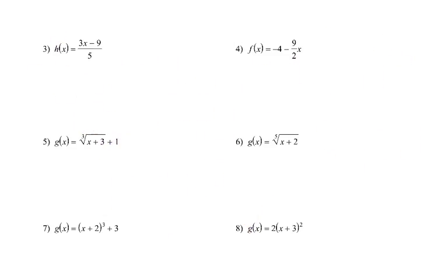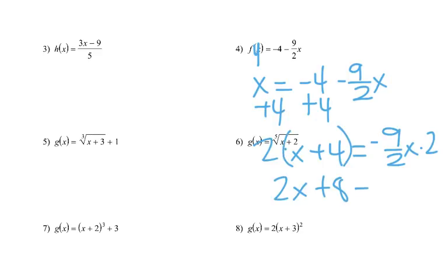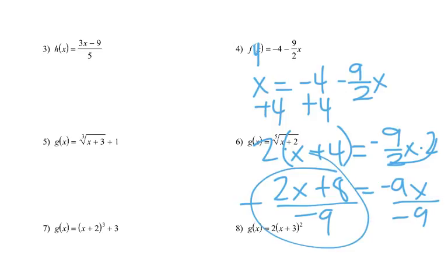Number 4 — as you can see, same process. That's y, change the x and y: x equals negative 4 minus 9 halves y. Add 4 to both sides: x plus 4 equals negative 9 halves y. Times by the reciprocal, or we could times by 2 separately: 2x plus 8 equals negative 9y, because those cancel. Then divide by negative 9 and we'd end up with that inverse. Yeah, it looks ugly, but that's alright.